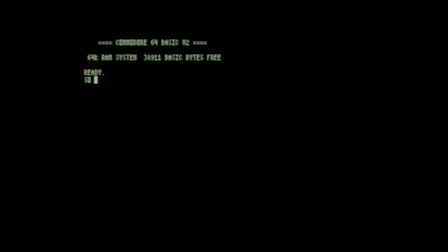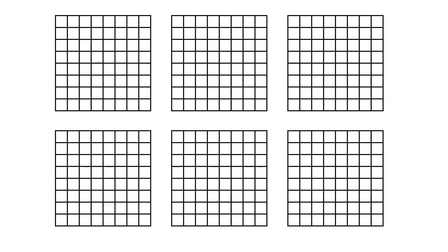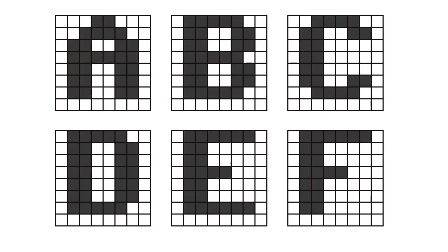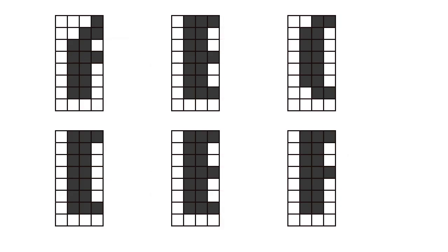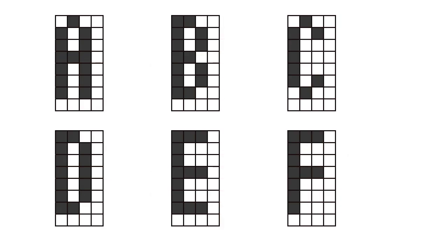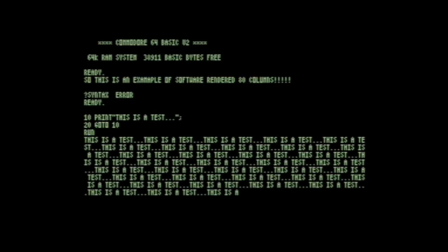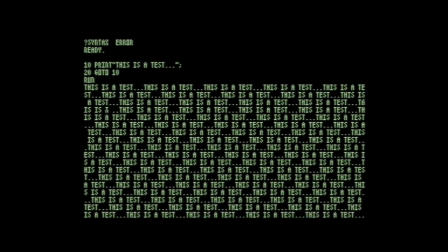The software method required putting the C64 into bitmap graphics mode and using a software-rendered 80 columns. The typical character set used on the C64 is 8 pixels wide. In order to give 80 columns using the built-in video chip, it required cutting all of those in half and using a 4-pixel-wide font instead. Still, it doesn't look too bad — at least in the emulator.